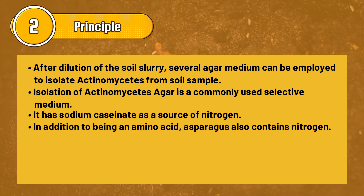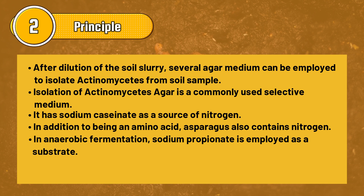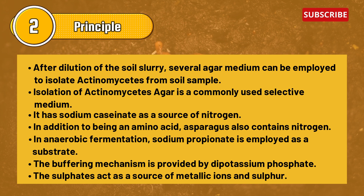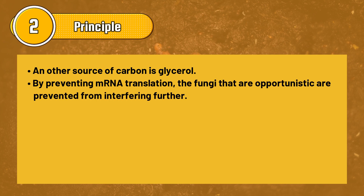Asparagine also contains nitrogen. Sodium propionate is employed as a substrate in anaerobic fermentation. Dipotassium phosphate provides the buffering mechanism. The sulfates act as a source of metallic ions and sulfur, and glycerol serves as another source of carbon.